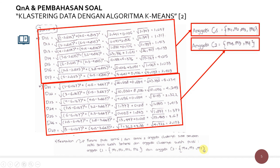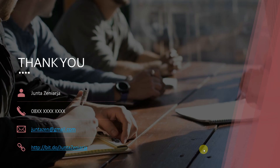Dari data M1 sampai M7 tadi, kita sudah mendapatkan anggota cluster dari masing-masing kelompok. Itu yang dapat saya sampaikan untuk bagaimana cara melakukan clustering data dengan algoritma K-Means secara perhitungan manual. Terima kasih sudah mengikuti kuliah online hari ini. Mohon maaf jika ada perkataan yang salah. Saya tunggu komentar Anda, dan kita ketemu kembali di lain sesi. Assalamu'alaikum warahmatullahi wabarakatuh.